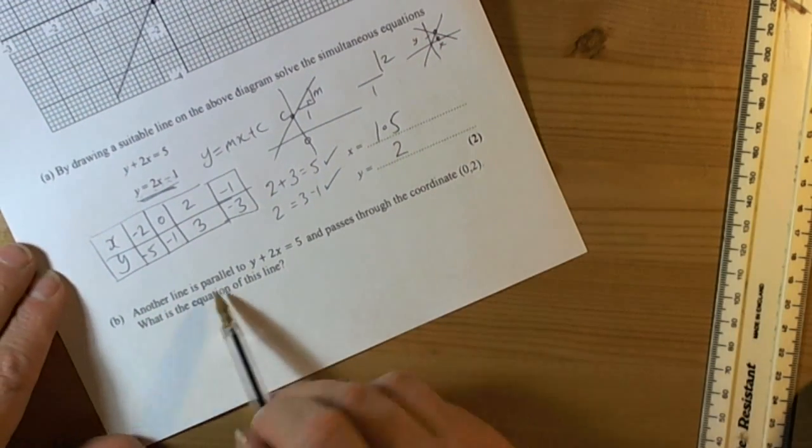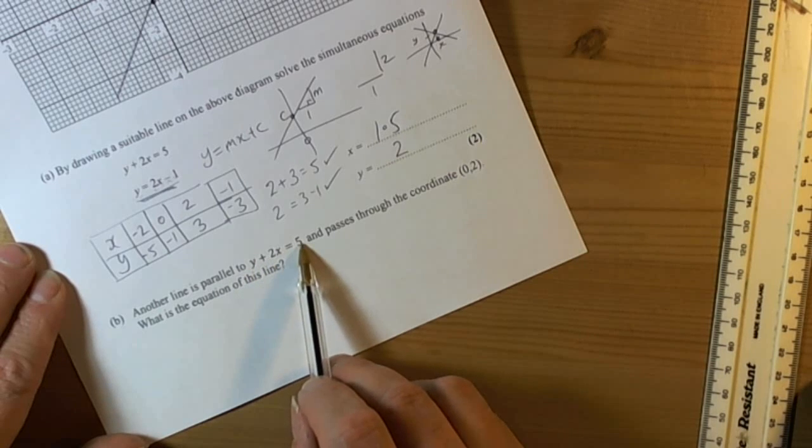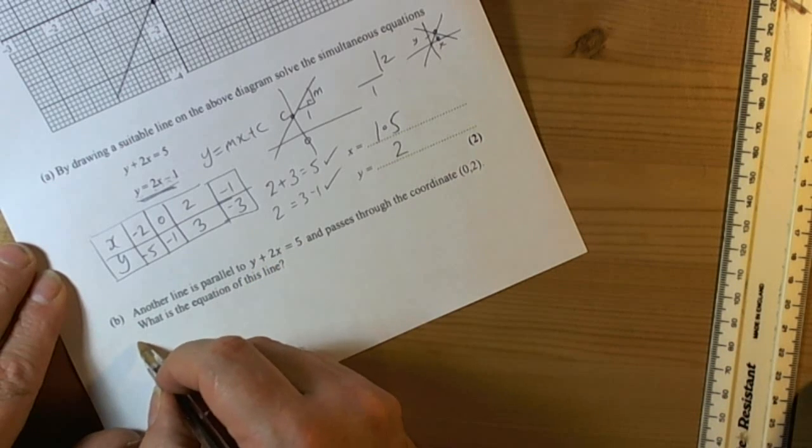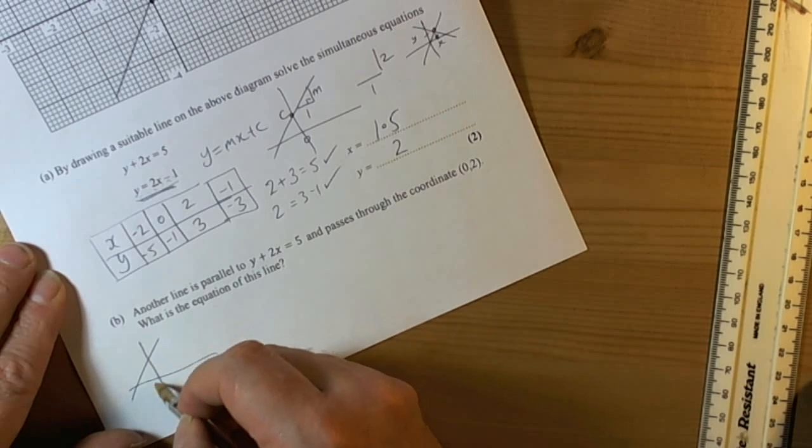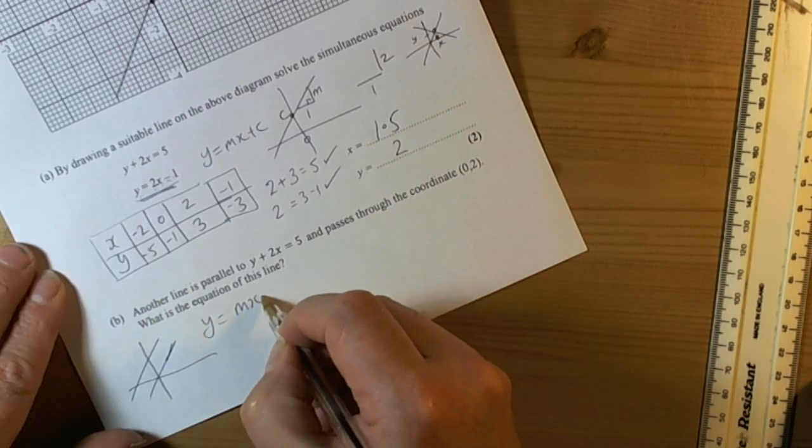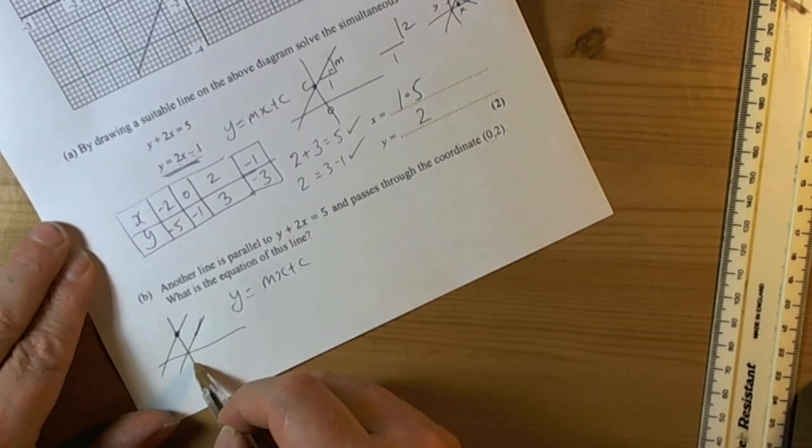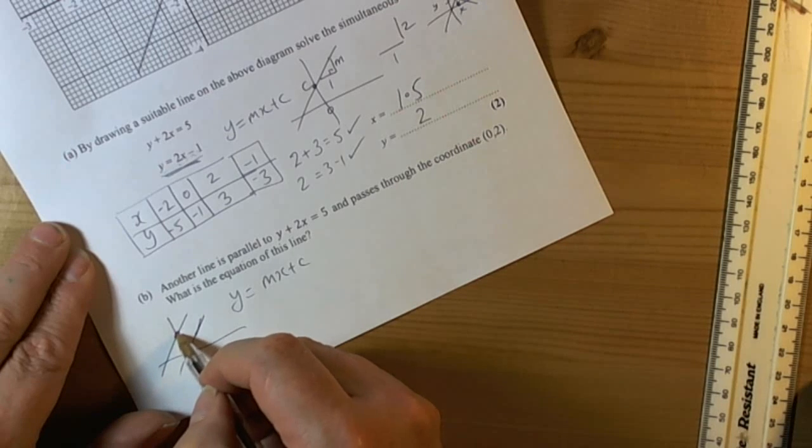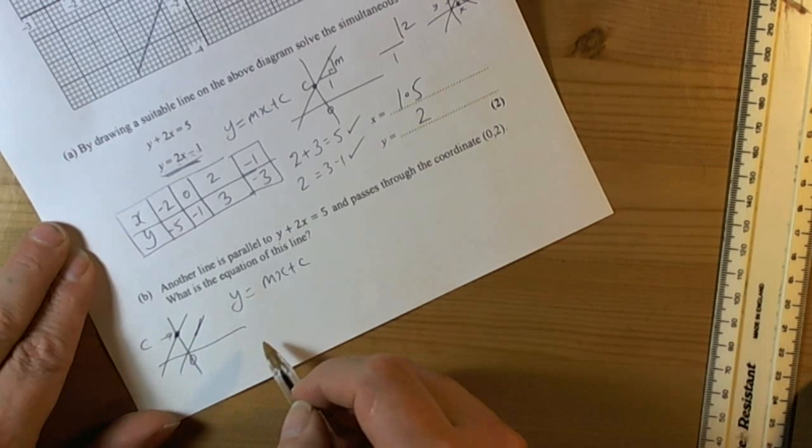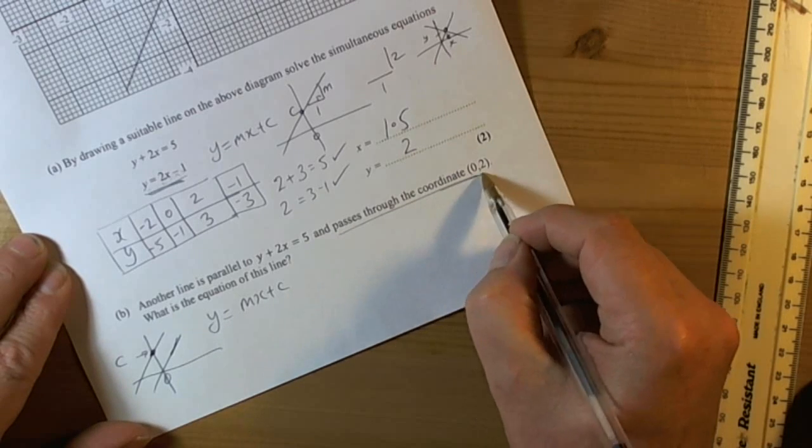Now the next part of the question asks us to find another line that's parallel to y plus 2x equals 5. Well, if lines are parallel, then they must have the same gradient. Standard equation is y equals mx plus c. If x is 0, then this point here is the c value. As it happens with this question, they've told us that it passes through the coordinate 0, 2.